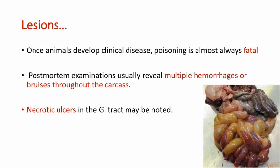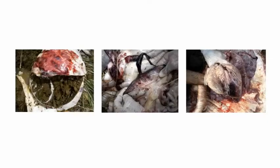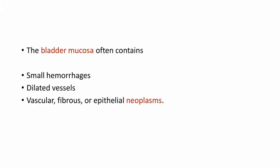Once an animal develops the clinical disease, poisoning is almost always fatal, and post-mortem examination usually reveals multiple hemorrhages or bruises throughout the carcass. Necrotic ulcers in the GI tract may also be noted. In this picture you can see hemorrhages in the intestine. The first picture shows hemorrhage over the serosal surface of omasum, the second one shows hemorrhage in the intestine, and the third one shows hemorrhage in the myocardium. The bladder mucosa often contains small hemorrhages, dilated vessels, and vascular, fibrous or epithelial neoplasms.